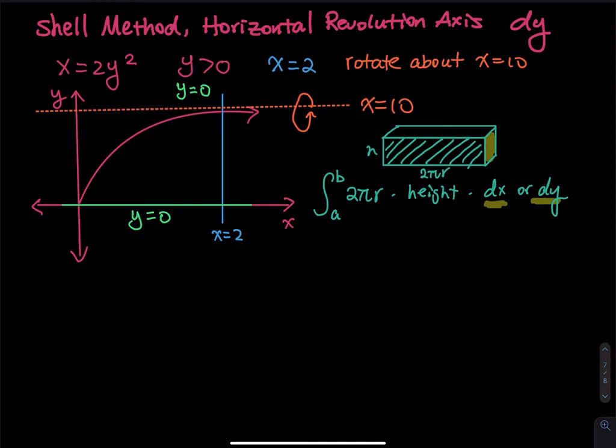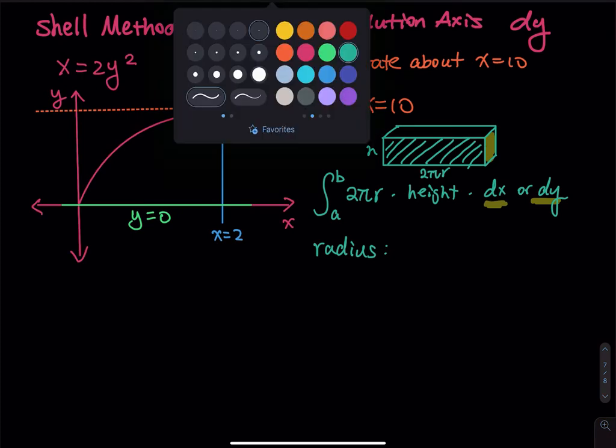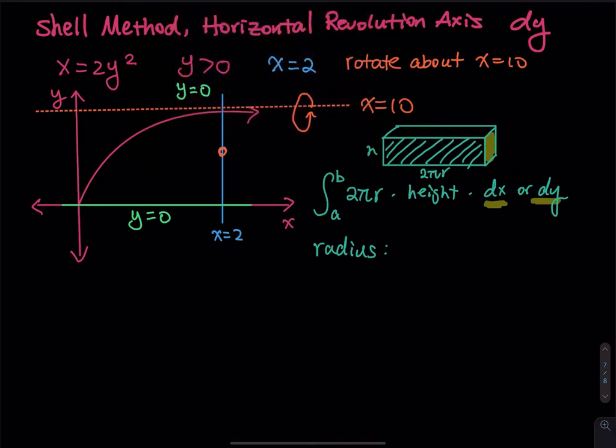To find the radius, let's take a look at a rectangle. So this is a dy problem. So the rectangle is going to be horizontal like this. So let's take another cut. So we have a point right here. So using the midpoint rule, we take that as a midpoint.